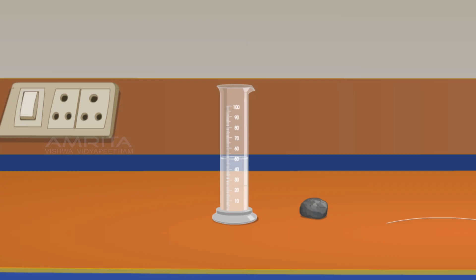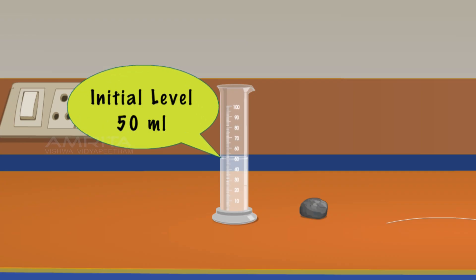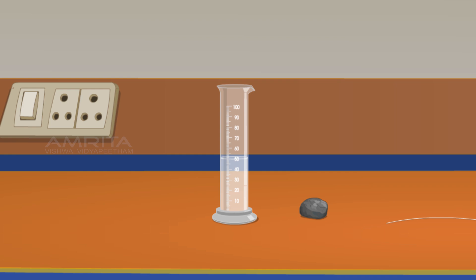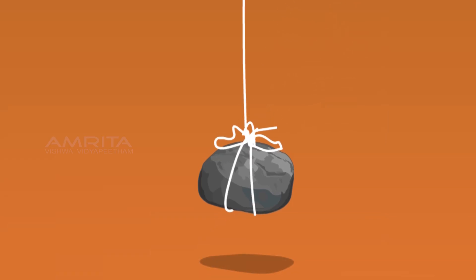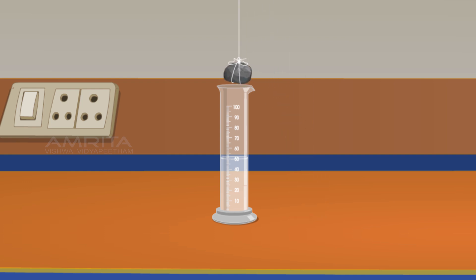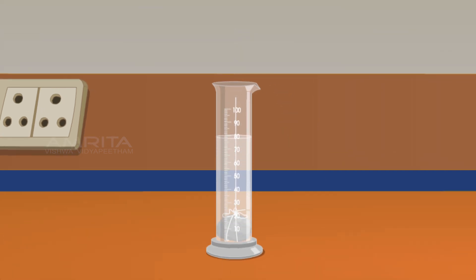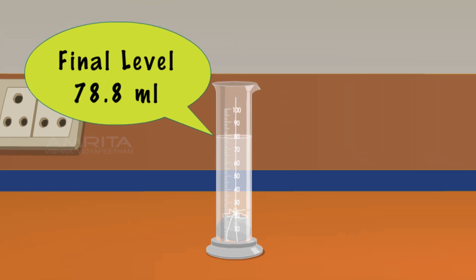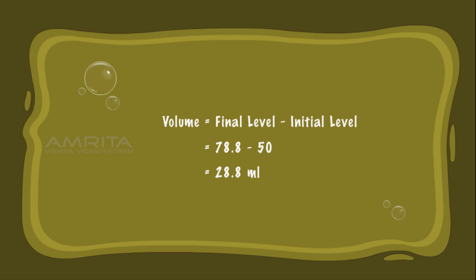Stone. Use a stone, a piece of twine, and 50 ml water in a 100 ml beaker. Tie the stone using the twine. Immerse the stone in the beaker holding the free end of the twine. The water level goes up to 78.8 ml. The volume of water displaced is 28.8 ml.